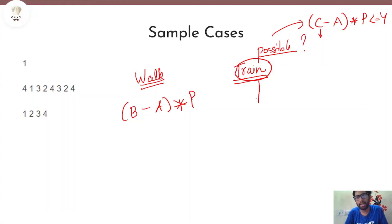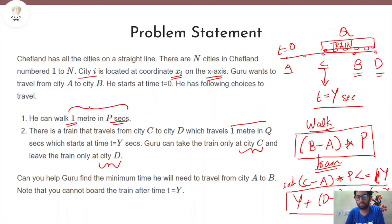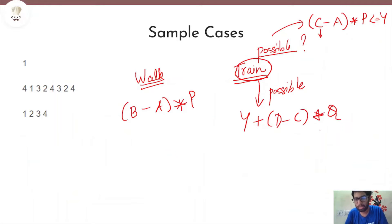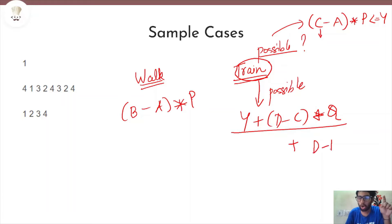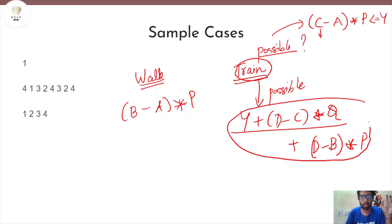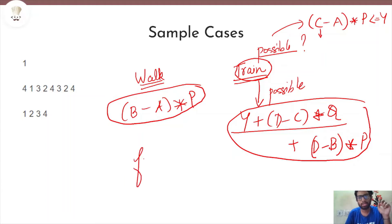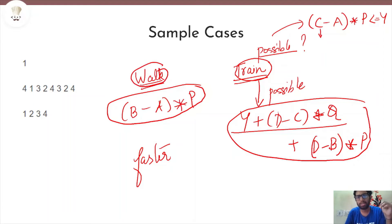If the feasibility condition is met, it is possible to take the train, and then we find the time: y plus (d minus c) × q plus (d minus b) × p. We then find out which is faster — walking or the train — by taking the minimum of these two values to determine how Guru reaches destination b fastest.